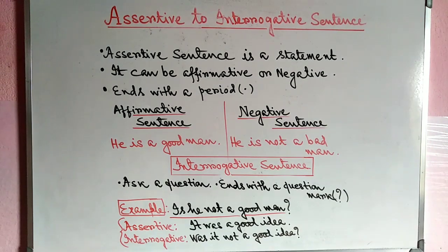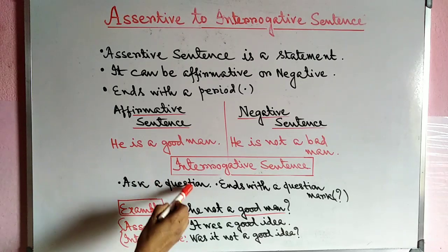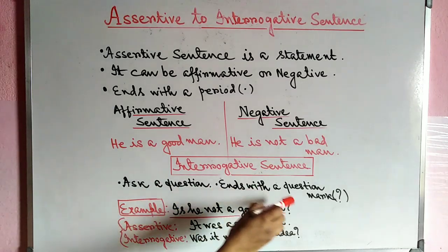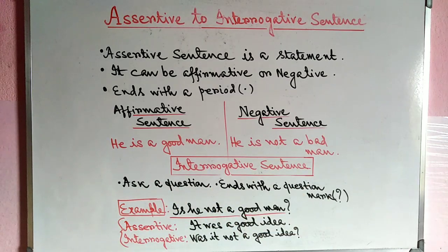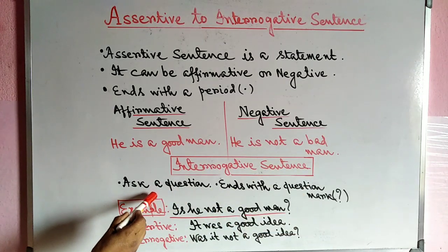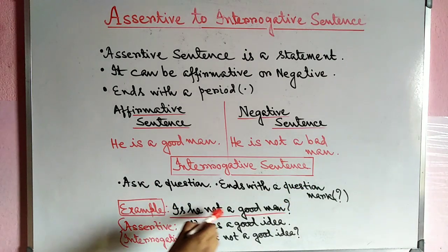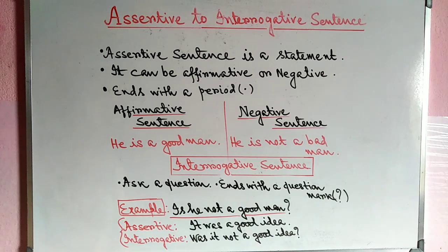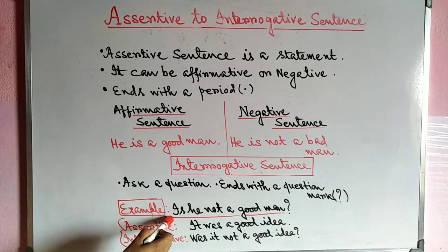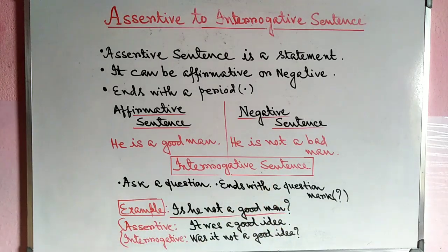An interrogative sentence is a question. The key question is: what makes a sentence interrogative? If 'he is a good man' is assertive, then 'is he not a good man?' becomes the interrogative form.